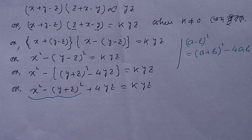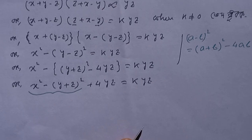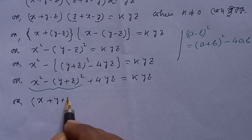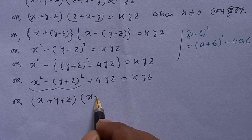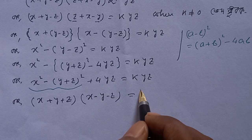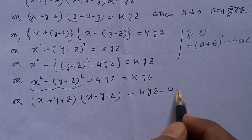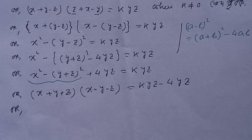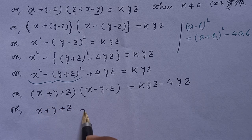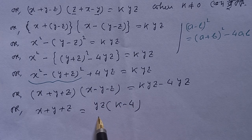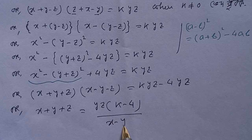We factor x squared minus y plus z whole squared as a squared minus b squared, applying a plus b into a minus b, giving x plus y plus z into x minus y minus z. Then x plus y plus z equals yz times k minus 4, divided by x minus y minus z.